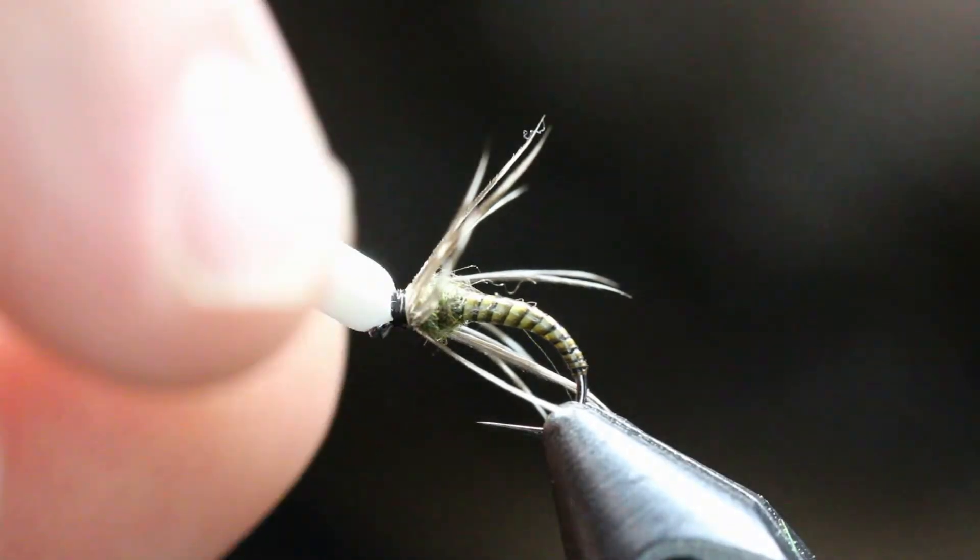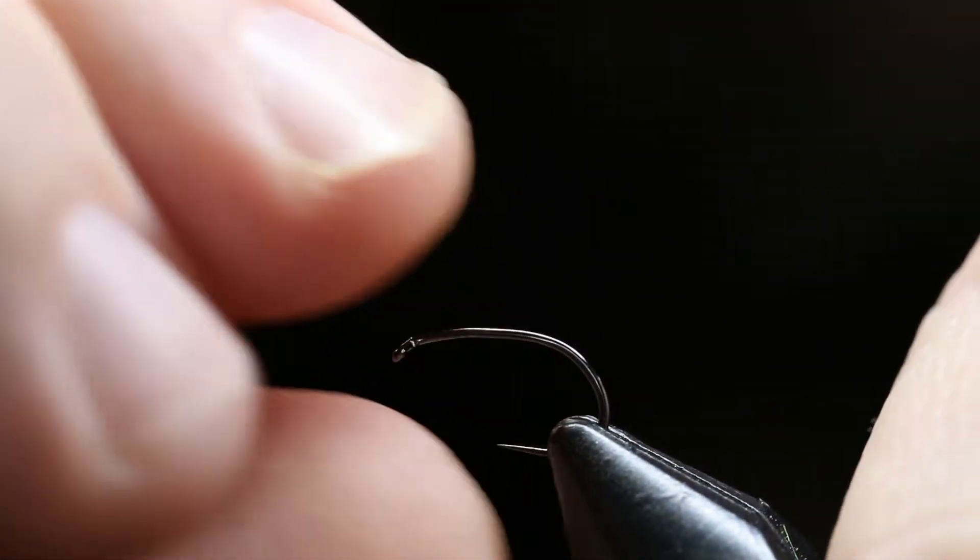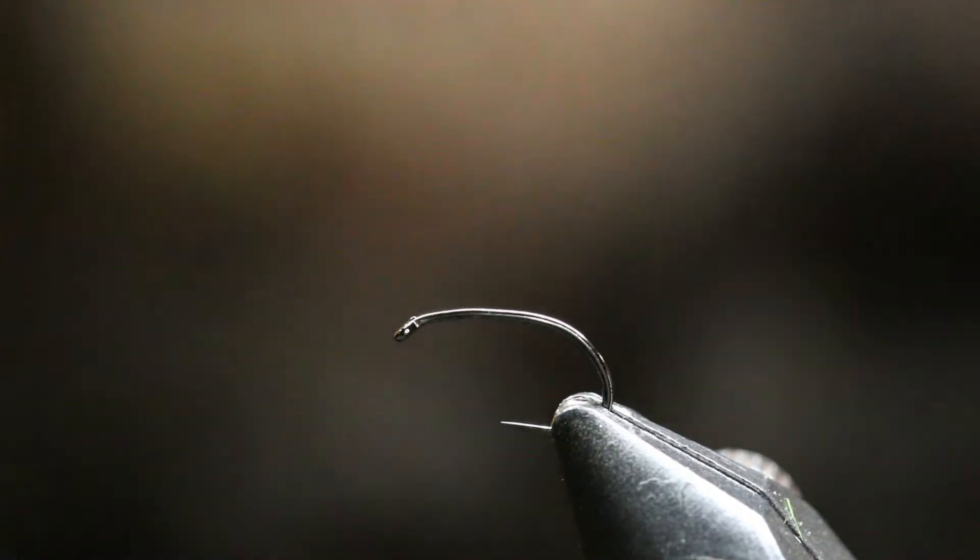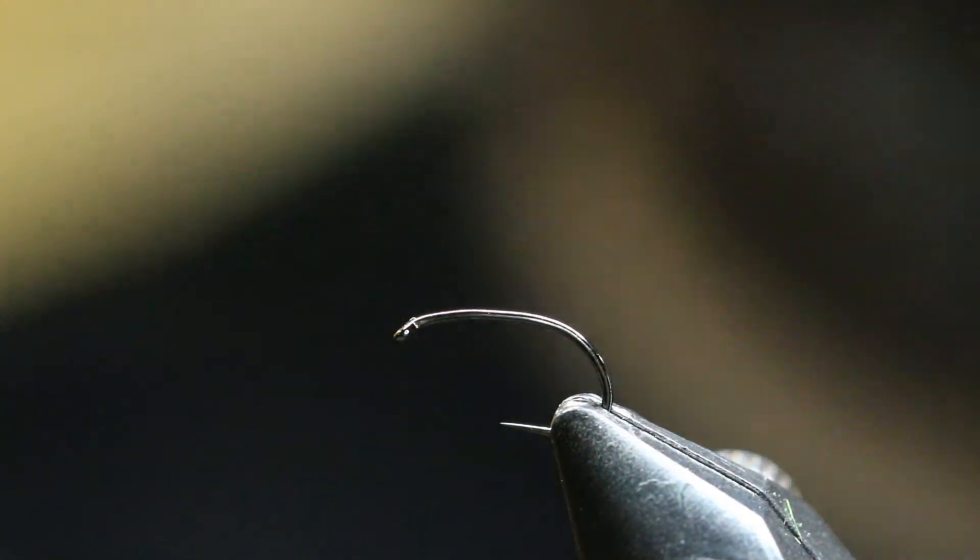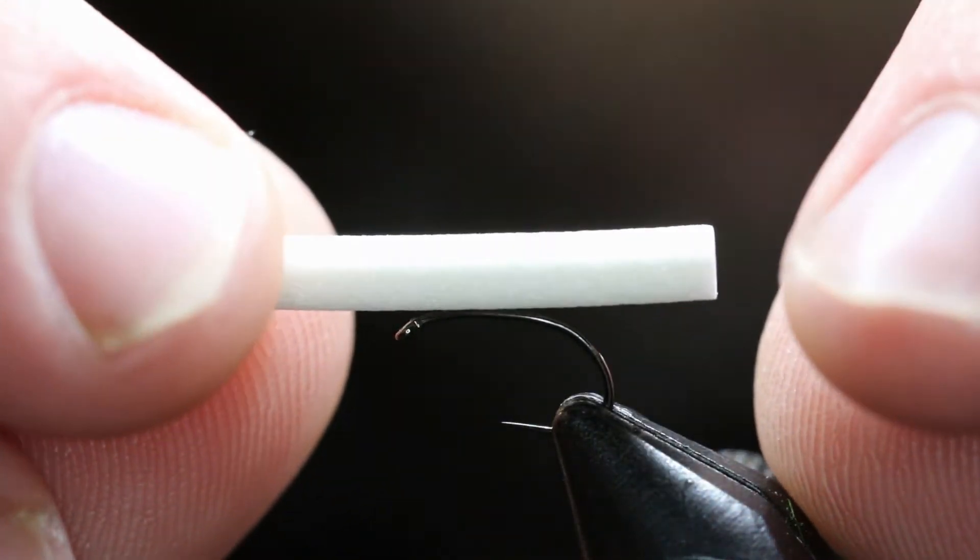So let's get into this. All right, we're going to be tying on a Hanak 300 in a size 16 here, and I got these waspy foam cylinders. These ones are small, so good idea of them.